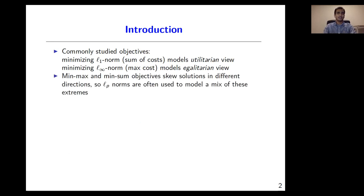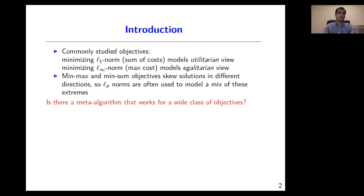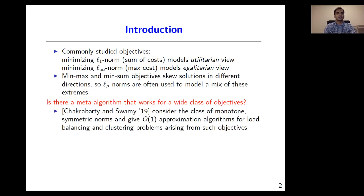The most commonly studied objectives are L1 and L-infinity norms. Minimizing the L1 norm models a utilitarian view, whereas minimizing the L-infinity norm models an egalitarian view. Min-max and min-sum objectives skew solutions in different directions, so Lp norms can be helpful in modeling a mix of these extremes. We want to define algorithms that can work for a wide class of objective functions. Recently, Chakrabarti and Swamy considered the class of monotone symmetric norms and gave order-one approximation algorithms for load balancing and clustering problems arising from such objectives.